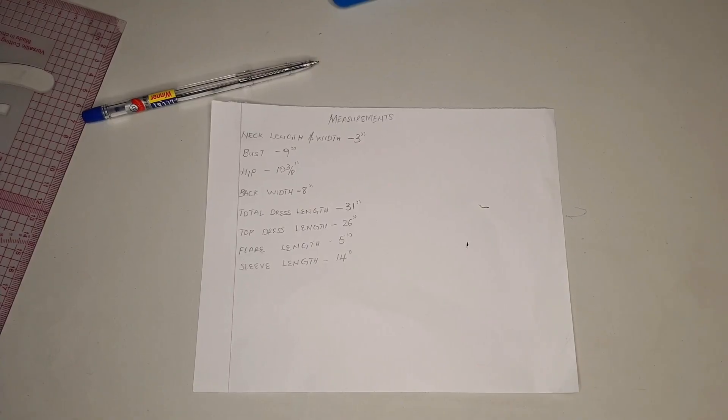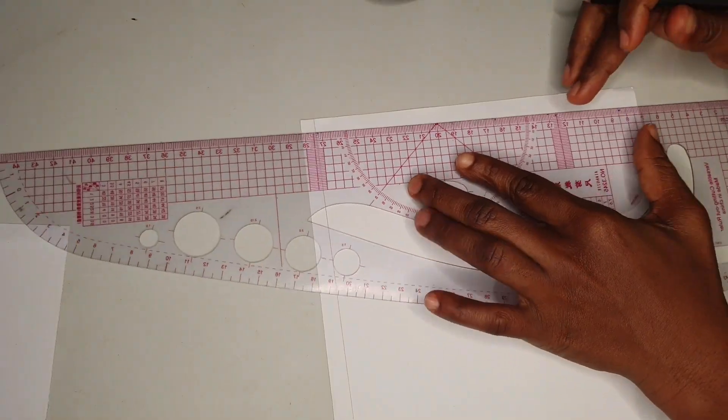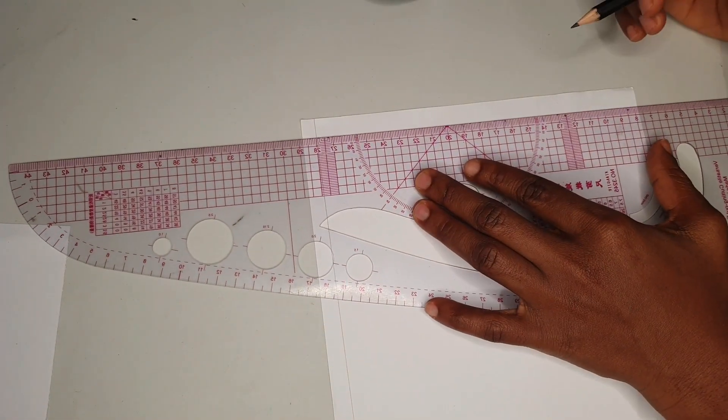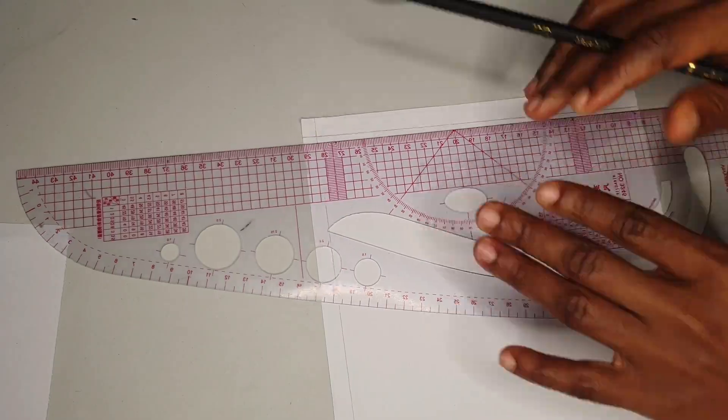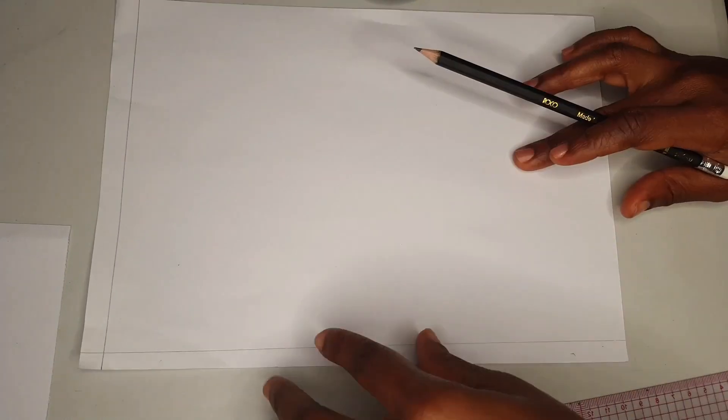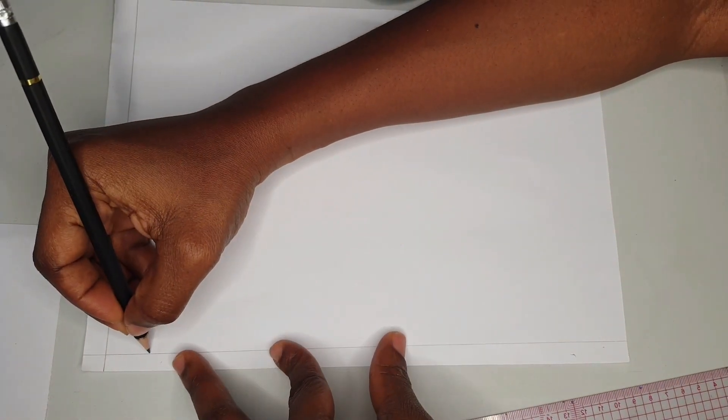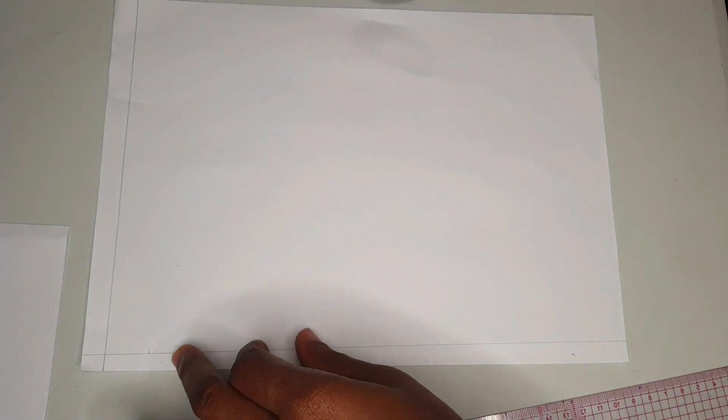First, get your measurements and your pattern paper. You create a structure on your pattern paper by drawing lines on each side and on top. I like to start by marking out my vertical measurements, starting with the neck, then down to the length of the dress. Because of how tight the neck is, I'll be using three inches for the neck length.